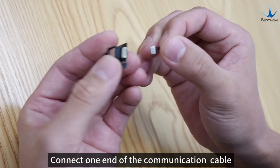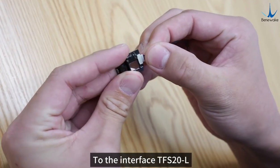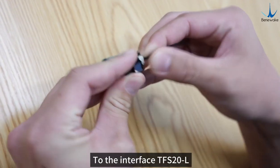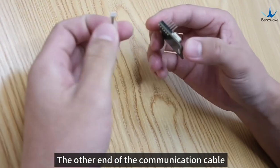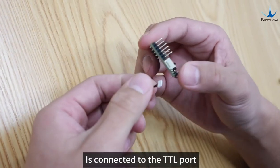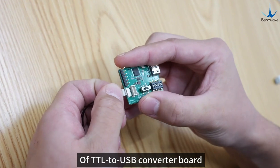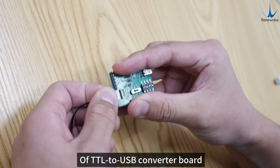Connect one end of the communication cable to the interface TFS20L. The other end of the communication cable is connected to the TTL port of TTL to USB converter board.